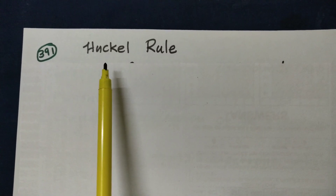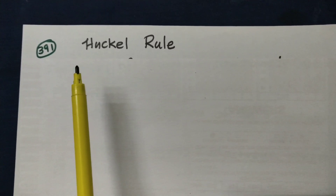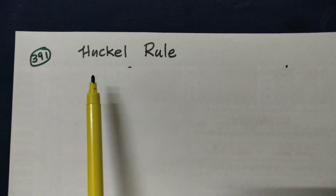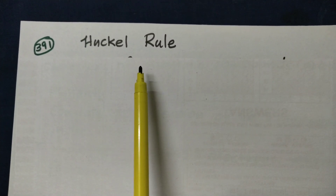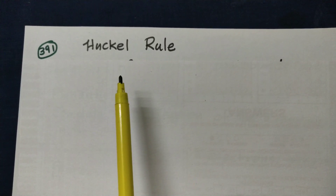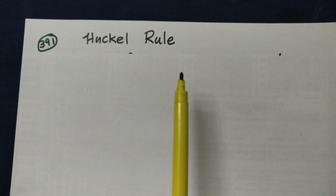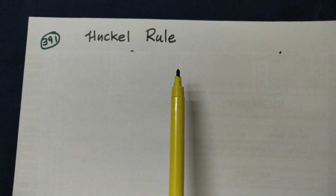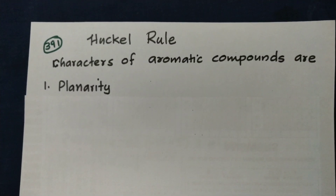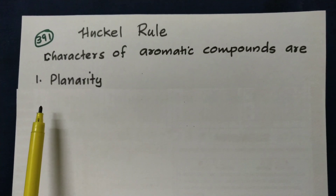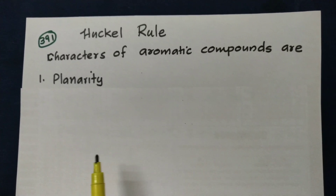The Hückel Rule is called a ring system or ring form. Condition one: the compound is planar. Benzene is a planar structure.